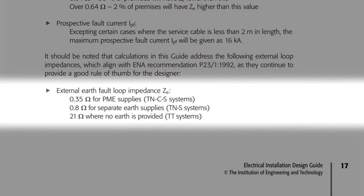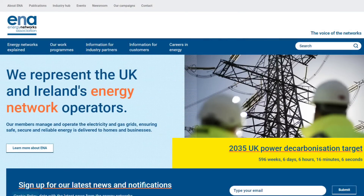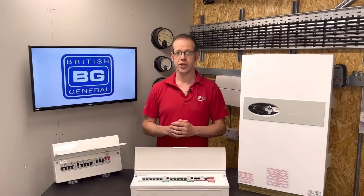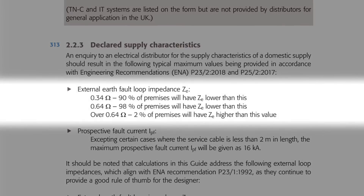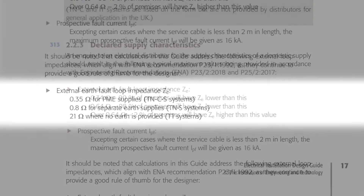Chances are the DNO will quote typical maximum values of 0.35 ohms for a TN-C-S, 0.8 ohms for a TN-S, and 21 ohms for a TT system. It's interesting to note that the Energy Networks Association have now issued newer guidance using percentages: 0.34 ohms — 90% of premises will have Ze lower than this; 0.64 ohms — 98% of premises will have Ze lower than this; and over 0.64 ohms — 2% of premises will have Ze higher than this value.